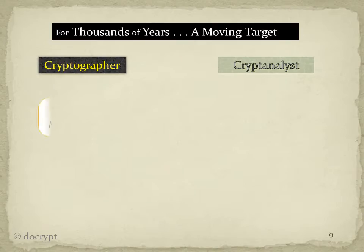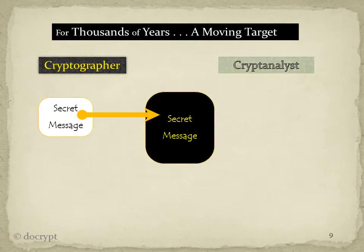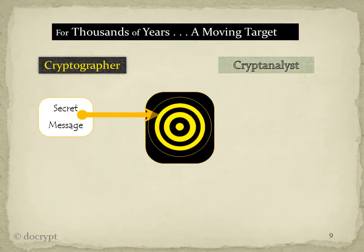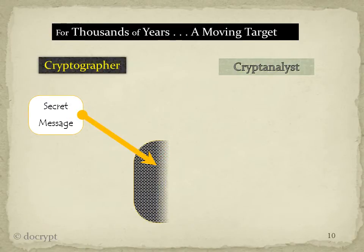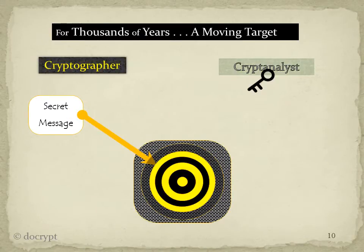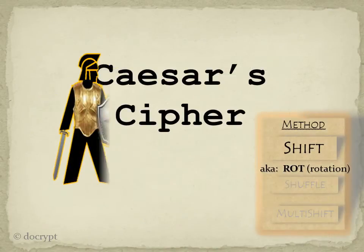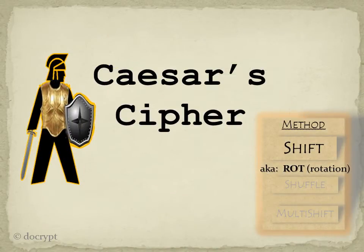And for thousands of years, cryptographers have been locking up messages until the cryptanalyst picks the lock and the cryptographer builds a better lock, and the game continues. One of the most simple and oldest cipher methods is usually referred to as Caesar cipher. I'm going to call it shift for reasons you'll see, and it's also known as rot.